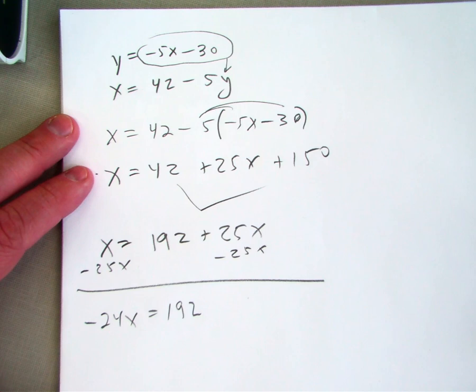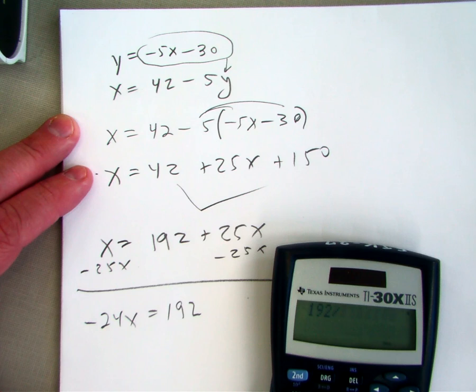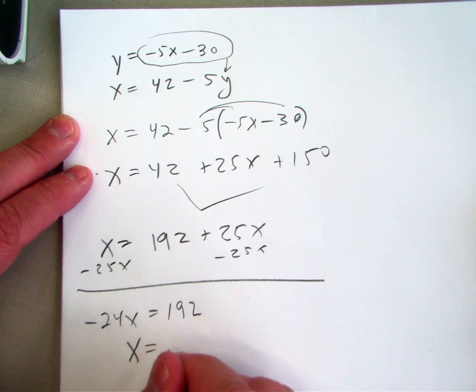And now I can take 192 and divide it by negative 24 to see what I get. It looks like x equals negative 8.